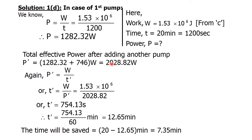The total effective power after adding the second pump is P-prime equal to 2028.82 watt. To find the new time, we use P-prime equal to W by t-prime, so t-prime equal to W by P-prime. Putting in the values, we get t-prime equal to 754.13 seconds. Dividing by 60 gives 12.65 minutes. So with two pumps working together it takes 12.65 minutes, whereas the first pump alone takes 20 minutes — meaning 7.35 minutes is saved.